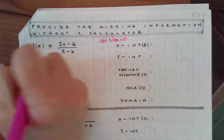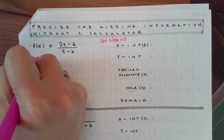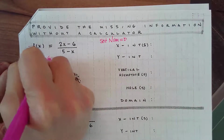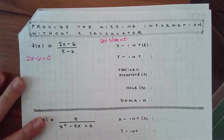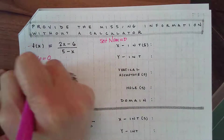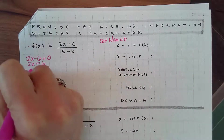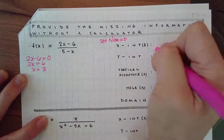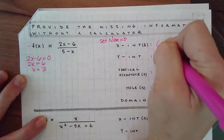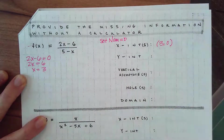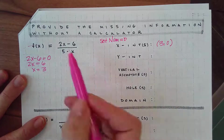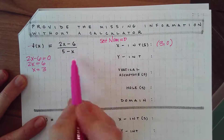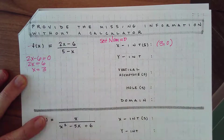So for this one, I'm going to do 2x minus 6 equals zero. I get 2x equals 6, x equals 3. Remember, an x-intercept is when y is zero, but the easiest way to do this for rational functions is just to look at the numerator, because the denominator won't have any effect.